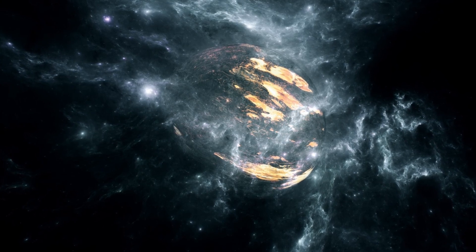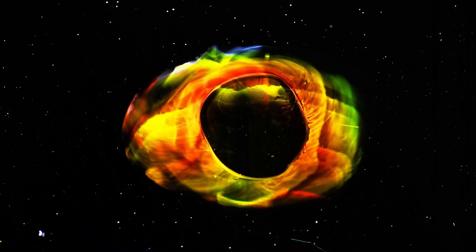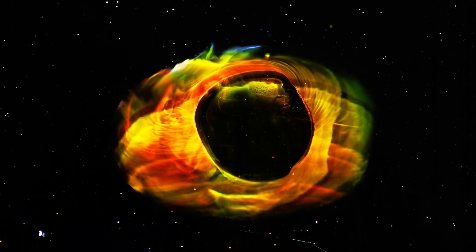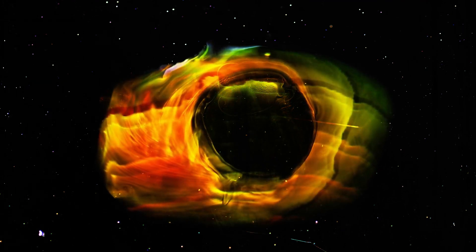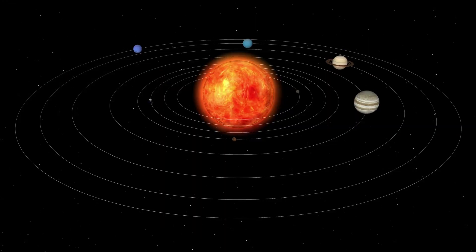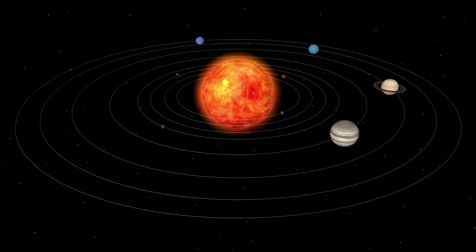Unlike our Sun, which will fade gently over billions of years, red supergiants like Betelgeuse live fast and die young. It's well into its final stages of life. But the question has always been, when will it explode?